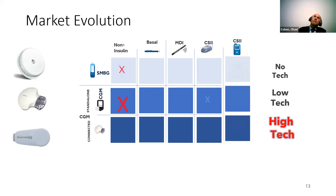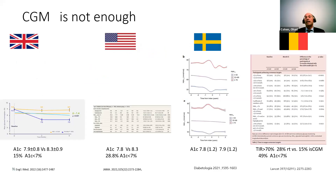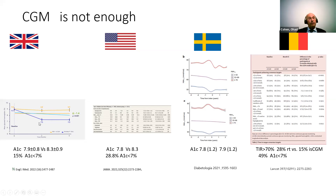There was a big move toward starting with CGM to see how this technology would change outcomes in type 1 diabetes. In the last two years, many countries have reimbursed CGM — intermittent or real-time. But the results were a bit underwhelming. In the UK, people using the FreeStyle Libre intermittent scanning decreased A1C from 8.3 to 7.9 — some improvement, but only 15% reached an A1C of less than 7.